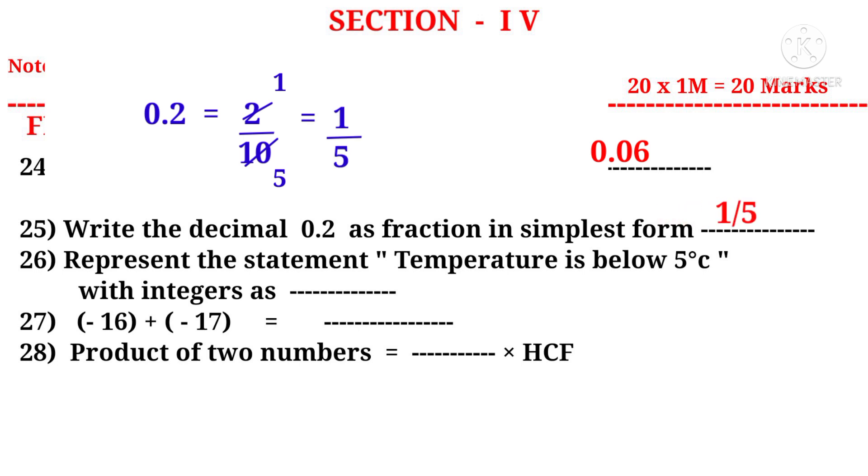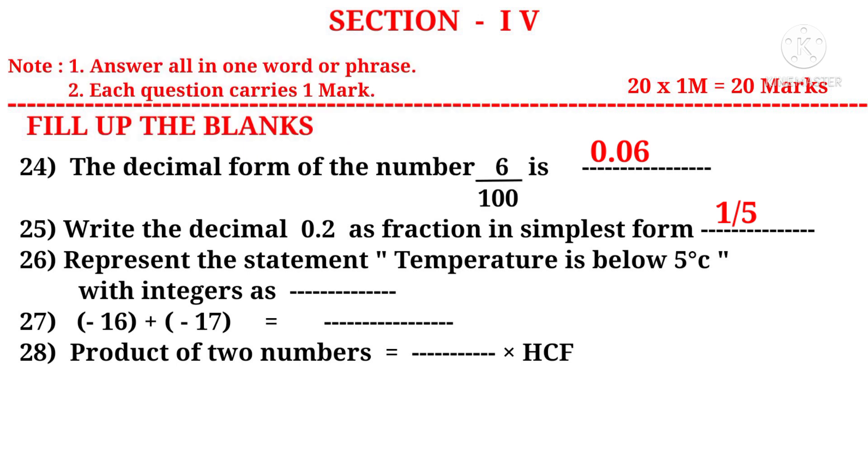Now 26: Represent the statement temperature is below 5 degrees centigrade with integers as. Observe the word below 5 degrees. It indicates minus. So minus 5 degrees centigrade. 27: Minus 16 plus minus 17. The sum of two negative numbers is also a negative number. So minus 33.